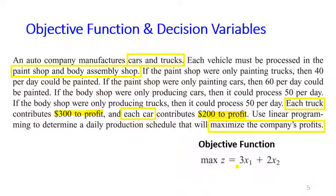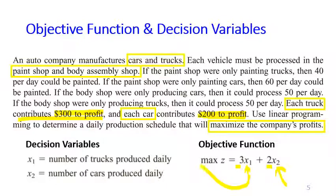So the objective function is 300x1 + 200x2, where x1 is the number of trucks produced daily and x2 is the number of cars produced daily. That is how I start from the objective function and then go back to define the decision variables in a very specific way.